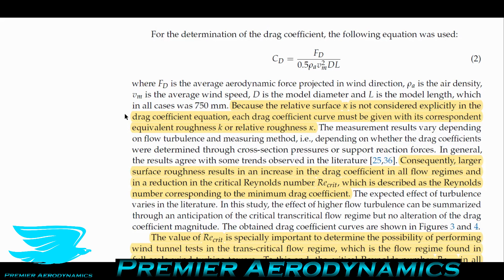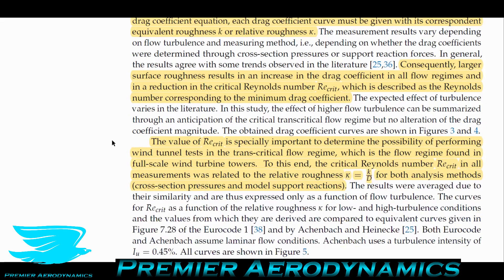Generally speaking, roughening the surface allows the flow to stay attached longer around the cylinder, reducing the wake size and therefore reducing pressure drag. This creates a complex interaction between friction drag and pressure drag. The statement that larger surface roughness increases drag in all flow regimes is only strictly true for friction drag — pressure drag may actually reduce, potentially giving an overall reduction in the drag coefficient depending on the application. Surface roughness is a major factor that is almost never reported alongside drag coefficient measurements, which is a significant problem.